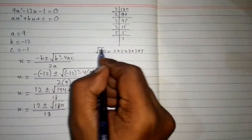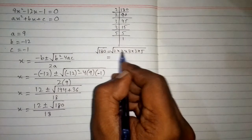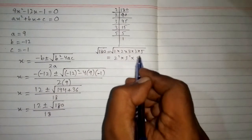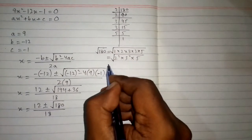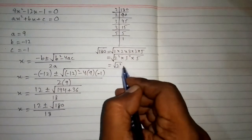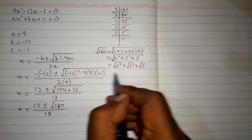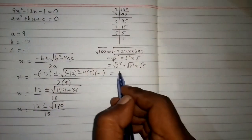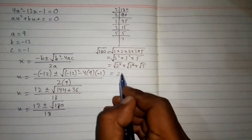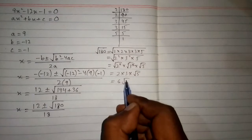So after factorization we have 180 is equal to 2 times 2 times 3 times 3 times 5, and both are in the square root. Now 2 times 2 is 2 square and 3 times 3 is 3 square, multiplied by 5 under root. Then we can write it as square root of 2 square multiplied by square root of 3 square multiplied by square root of 5. We can cancel square and square root, so we have 2 multiplied by 3 multiplied by under root 5, which simplifies to 6 under root 5.